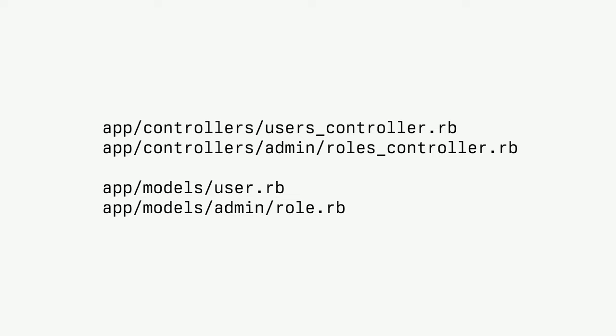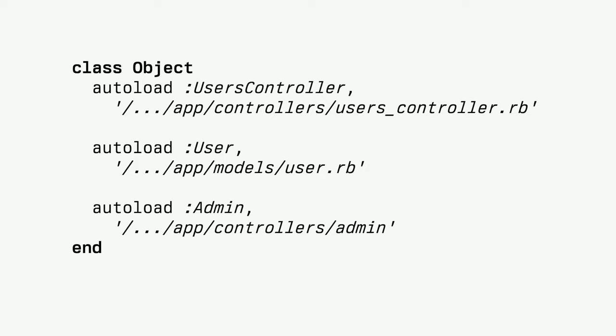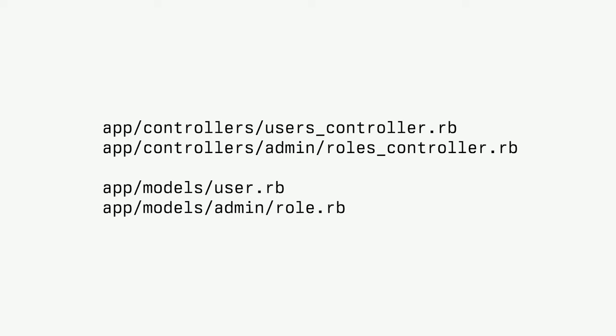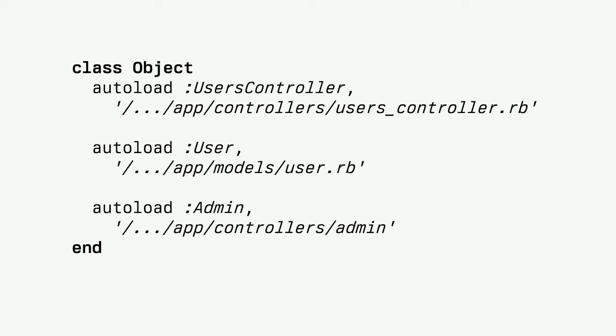What does setup do? Let's work with a concrete example. Our project has app/controllers/users_controller and an admin namespace with a roles_controller, then in models we have User and admin/Role. Zeitwerk does something super simple: it defines autoloads for these things one level only — it does not descend into the admin namespace. It sets three autoloads: one for UsersController, one for User, and one for Admin.